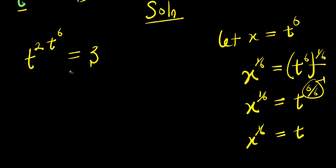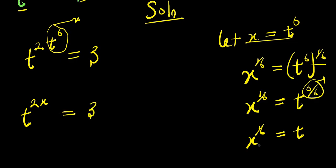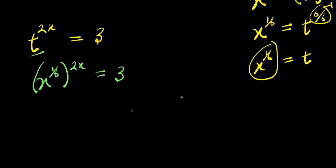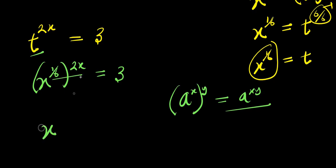Now I come over here. Remember this t to the power of six here is x, just like what we did. So we have t to the power of two x equals three, and my t is x to the power of one over six — meaning I am going to replace t with x to the power of one over six, raised to the power of two x, and this equals three. Recall: if you have a to the power of x, raised to the power of y, that equals a to the power of x times y. So multiplying this out, I will have x to the power of two x times one over six, which is two x divided by six, and this equals three.